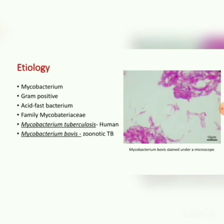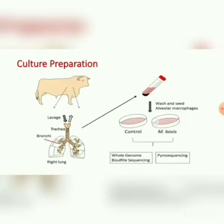Here is a photograph of Mycobacterium bovis stained under a microscope. For cultural preparation, the tubercle from the bronchi of the right lung of the affected animal is taken. It is prepared into two parts: control and Mycobacterium bovis.